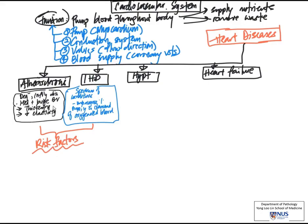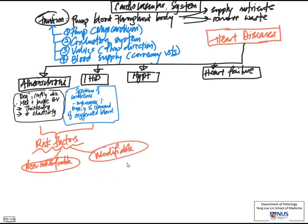A quick look at risk factors for atherosclerosis and ischemic heart disease — there is significant overlap since the number one cause of ischemic heart disease is coronary artery atherosclerosis. The simplest approach is to look at non-modifiable versus modifiable risk factors. Under non-modifiable: higher age group (middle age to elderly), males or post-menopausal women, family history of ischemic heart disease, and those who may be genetically predisposed, for example to hyperlipidemia.